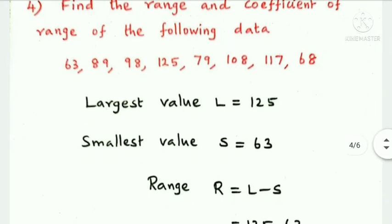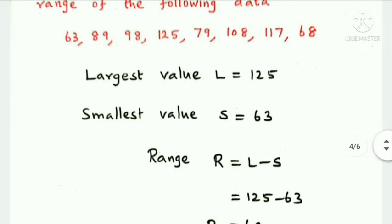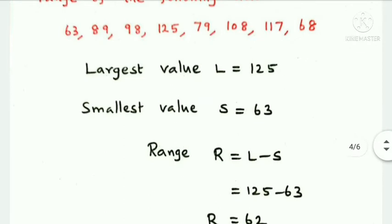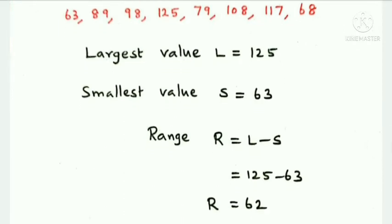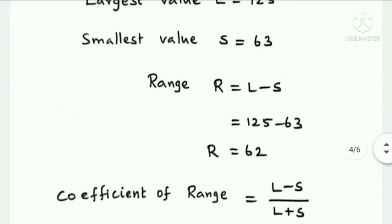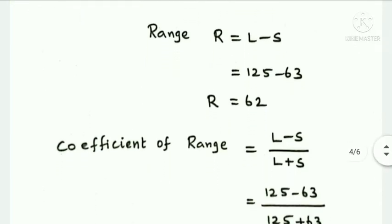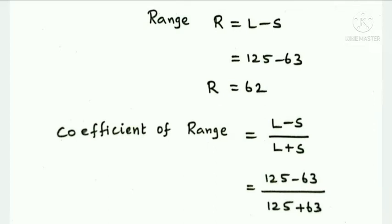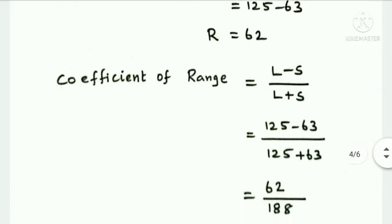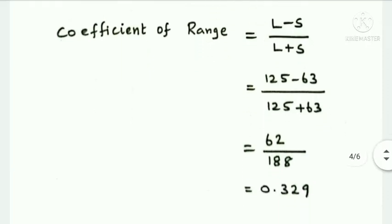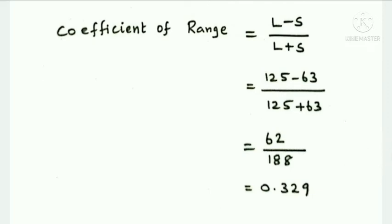Range R equals L minus S equals 125 minus 63 equals 62. For the coefficient of range, the formula is L minus S divided by L plus S: 125 minus 63 over 125 plus 63 equals 62 over 188. Dividing, the coefficient of range is 0.329.